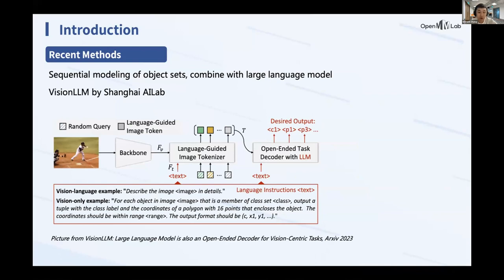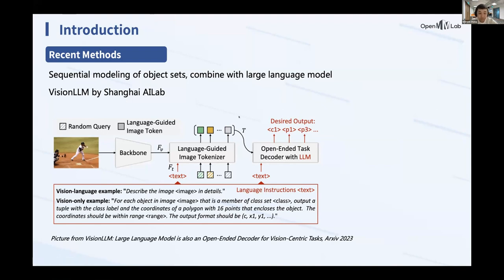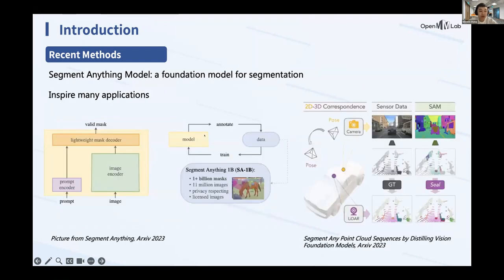This idea can be further extended by large language models. With a pre-trained LLM, we can add a backbone and a language-guided image organizer that takes image features as input to the LLM and aligns visual-centric tasks with language tasks, flexibly defined via language instructions. A language-based decoder then makes appropriate predictions for different visual tasks. This method is called VGAgent, recently proposed by Shanghai AI Lab.